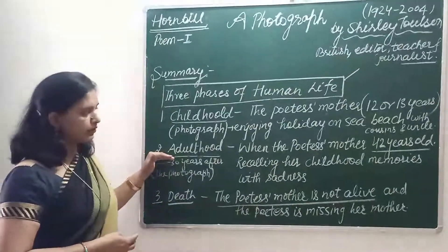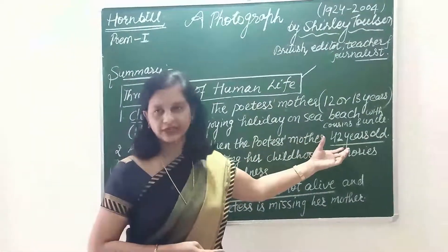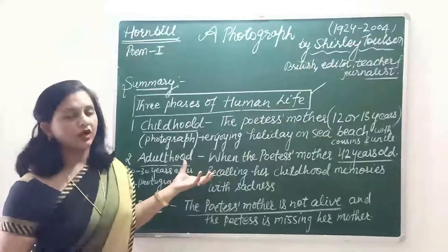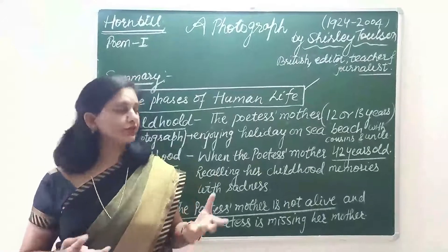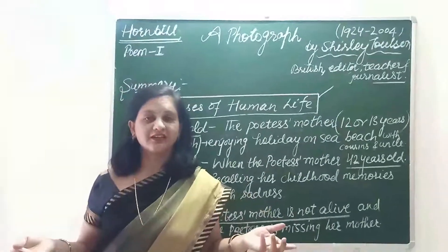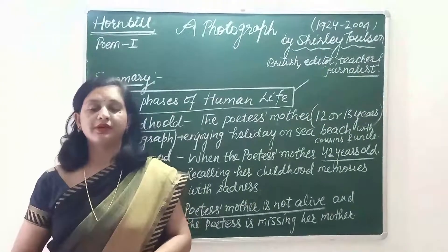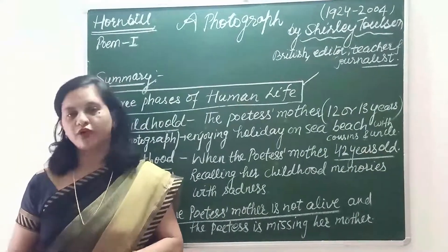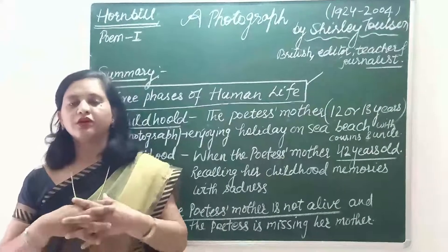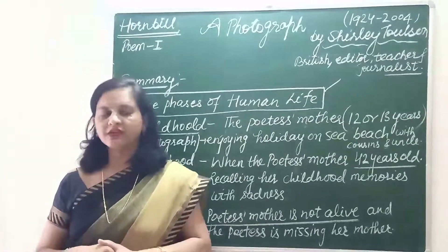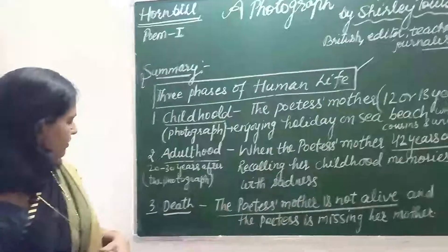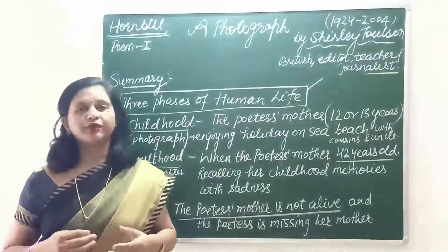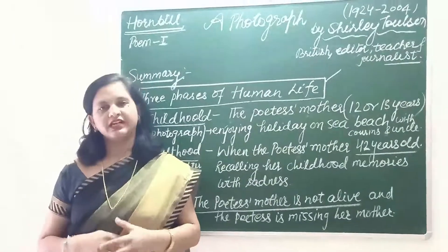She is enjoying her holiday on a sea beach with her cousins and her uncle. In the second phase — adulthood — the poetess's mother is about 42 years old and she remembers her childhood days. In the third phase, the poetess's mother is no longer alive and the poetess is missing her mother very much and feels alone.